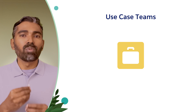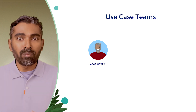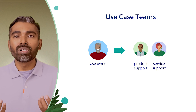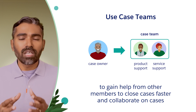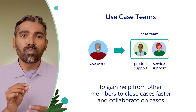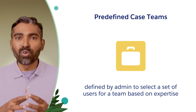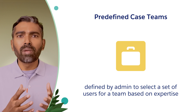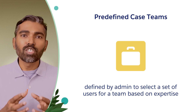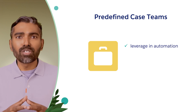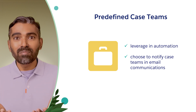Teams are also available for cases — in terms of customer support, when cases are created, you can get help from other members who are support, product, or service team members who are able to help you close the case faster and collaborate on the case you're working with. Similar to account teams and opportunity teams, case teams have to be enabled. With case teams, you also have another capability called predefined case teams, defined by the administrator. You can handpick a set of users and predefine them with a case team name — for example, experts on a specific product. Once you have a predefined case team, you can leverage it in automation such as assignment rules, and if you're using email notifications as part of automation actions, you can choose to notify the predefined case team, not just the owner.